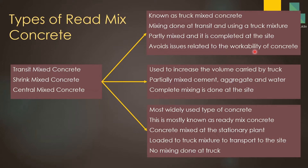Shrink mix concrete is used to increase the volume carried by the truck. The cement, aggregate, and water are partially mixed and put into the truck, which has a lesser volume. Complete mixing is then done at the site. This is the specialty of shrink mix concrete.